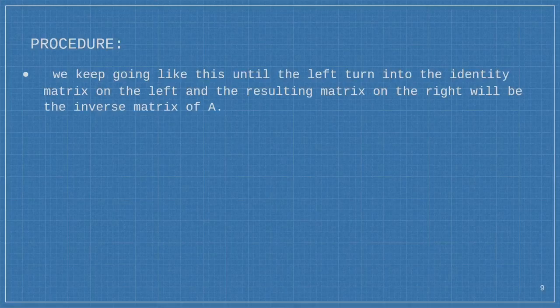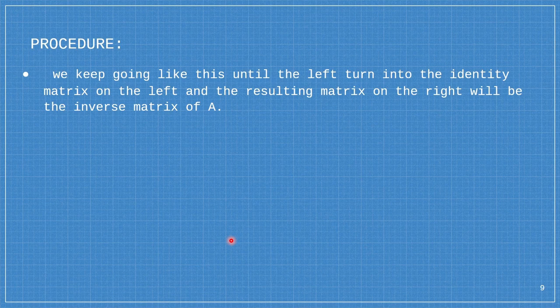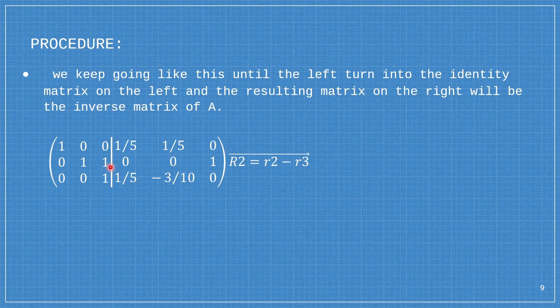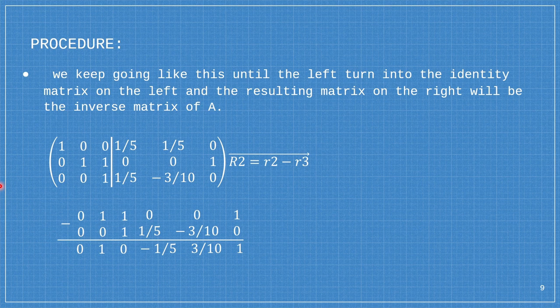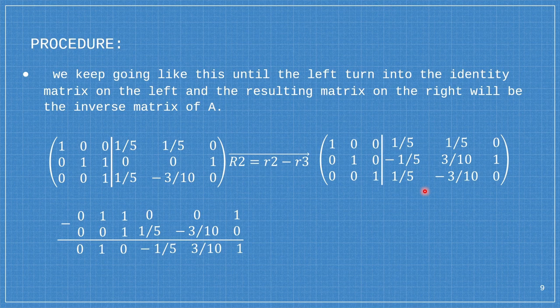Since we have 1 here, our next step is to make this into 0, following R2 minus R3. 0 minus 0 is 0, 1 minus 0 is 1, 1 minus 1 is 0, 0 minus 1 over 5 is negative 1 over 5, 0 minus negative 3 over 10 is 3 over 10, and 1 minus 0 is 1. We replace row 2 by this. Now we have the identity matrix on the left, and the right side is our inverse matrix — therefore, that is our answer.